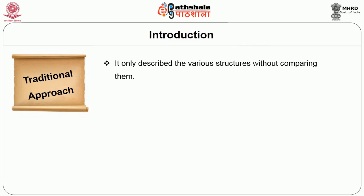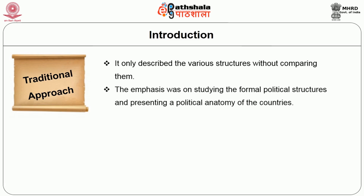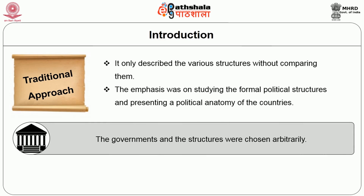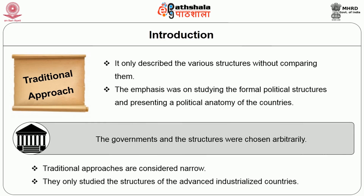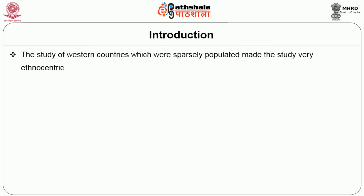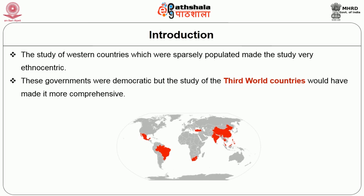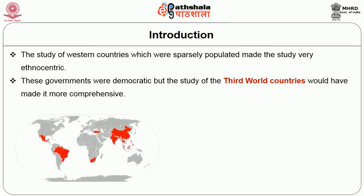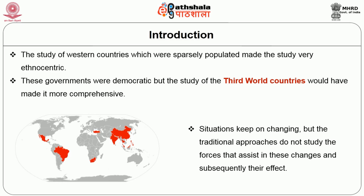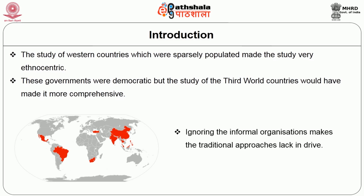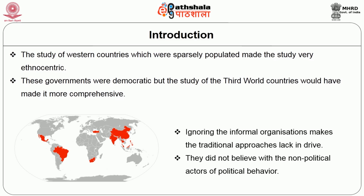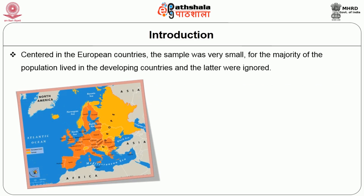The traditional approach only described the various structures without comparing them. The emphasis was on studying the formal political structures and presenting a political inventory of countries; the governments and structures were chosen arbitrarily. Traditional approaches were considered narrow — they only studied the structures of the advanced industrialized countries. The study of western countries which were sparsely populated made the study very ethnocentric. No doubt these governments were democratic, but the study of third world countries would have made it more comprehensive. Situations keep on changing but the traditional approaches do not study the forces that assist in these changes. Ignoring informal organisations and not dealing with the non-political actors of political behaviour are further limitations, and the sample was very small as the majority of the population lived in developing countries which were ignored.